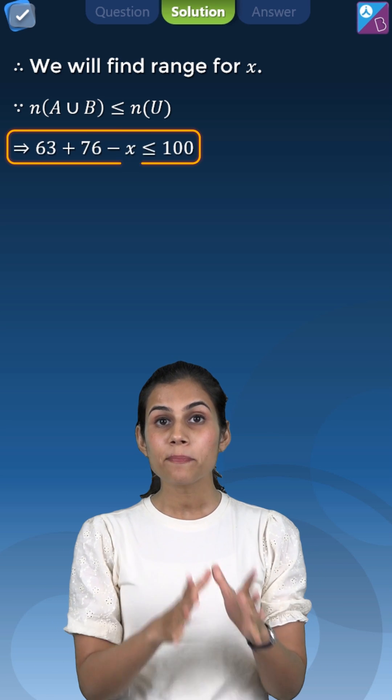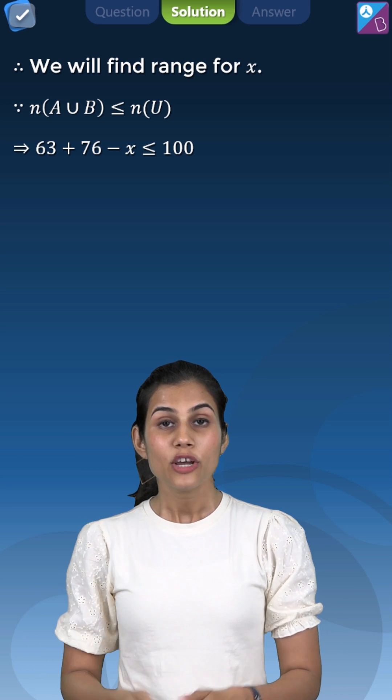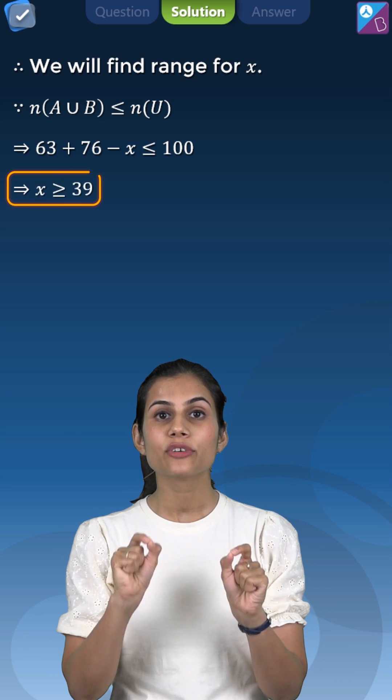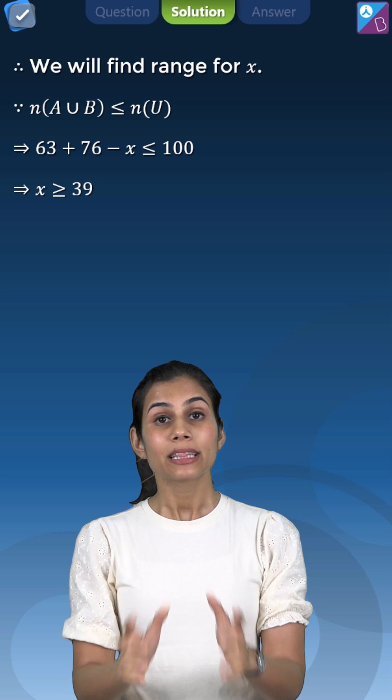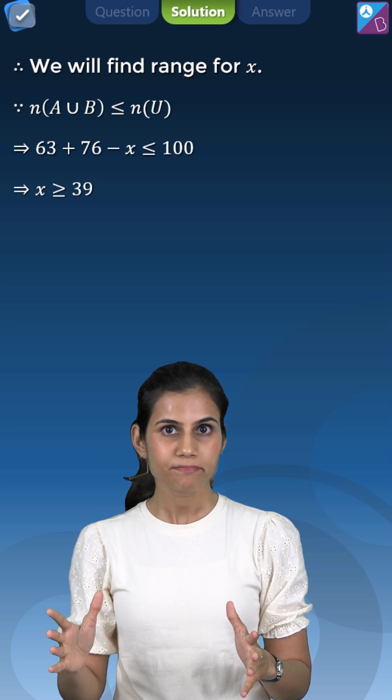So what are you getting? 63 plus 76 minus X will be at most 100. From there you end up getting that X is greater than equal to 39. Matlab ki X ki value at least 39 honi chahiye.